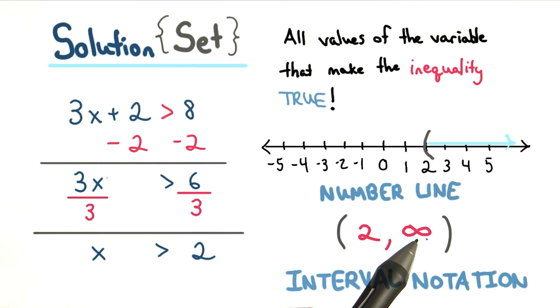We use an open parentheses for positive infinity because we can't actually reach infinity. Any number bigger than 2 will work.